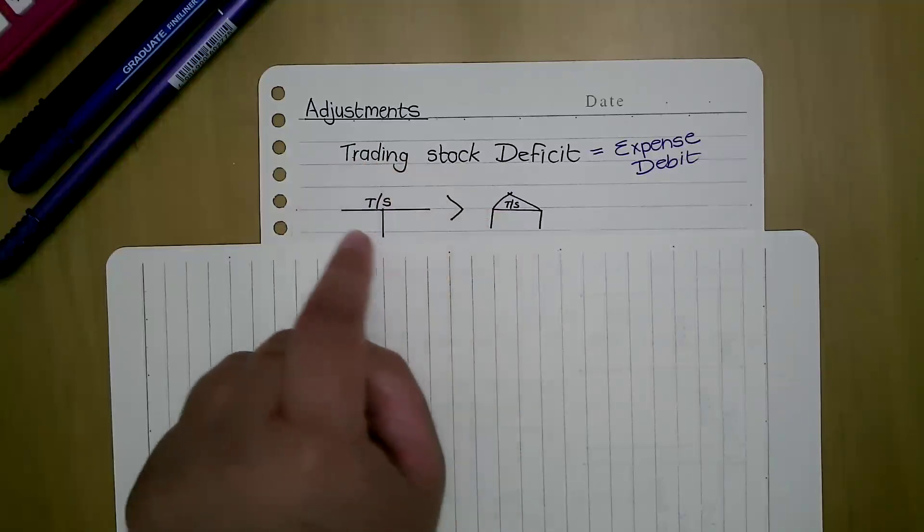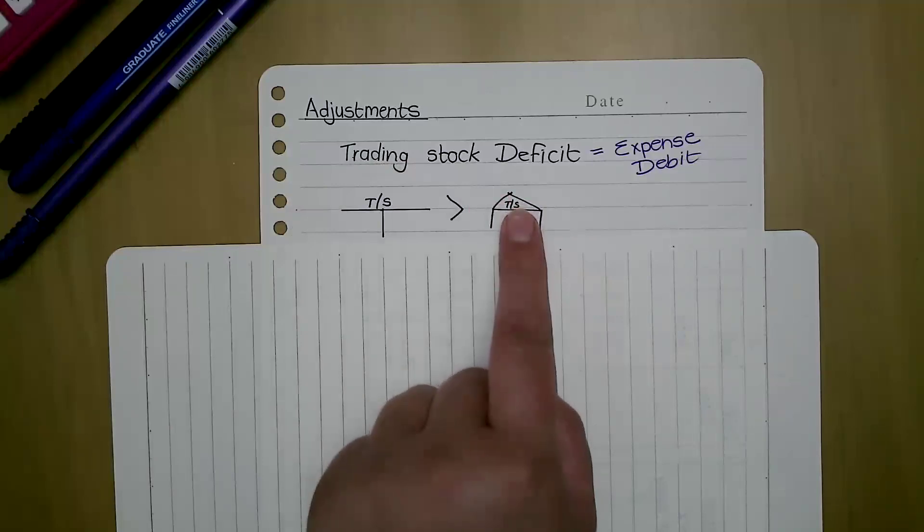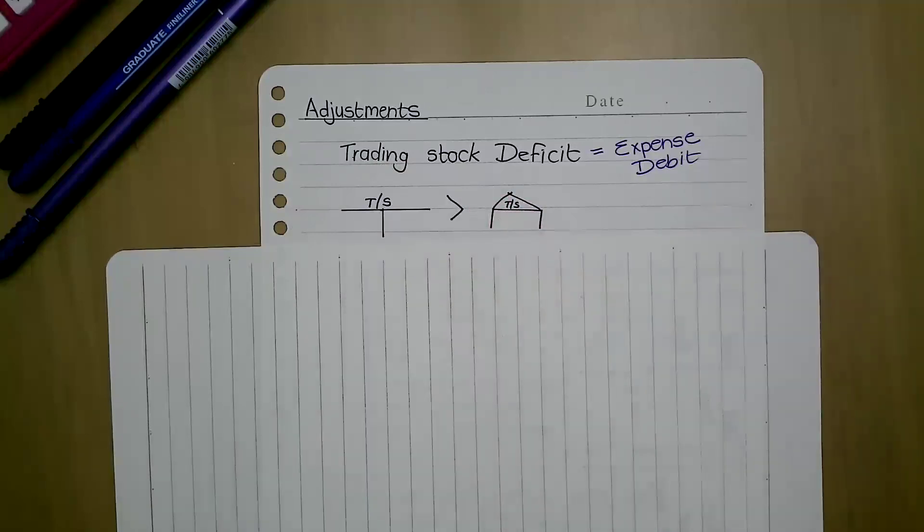With this adjustment, we need to change that trading stock account to be the same as the physical count, because the amount of trading stock in the physical count is correct. We saw the stock, we touched it, we can see it, we know that it is correct. So we need to change that trading stock account so that the amount is the same as the physical count.